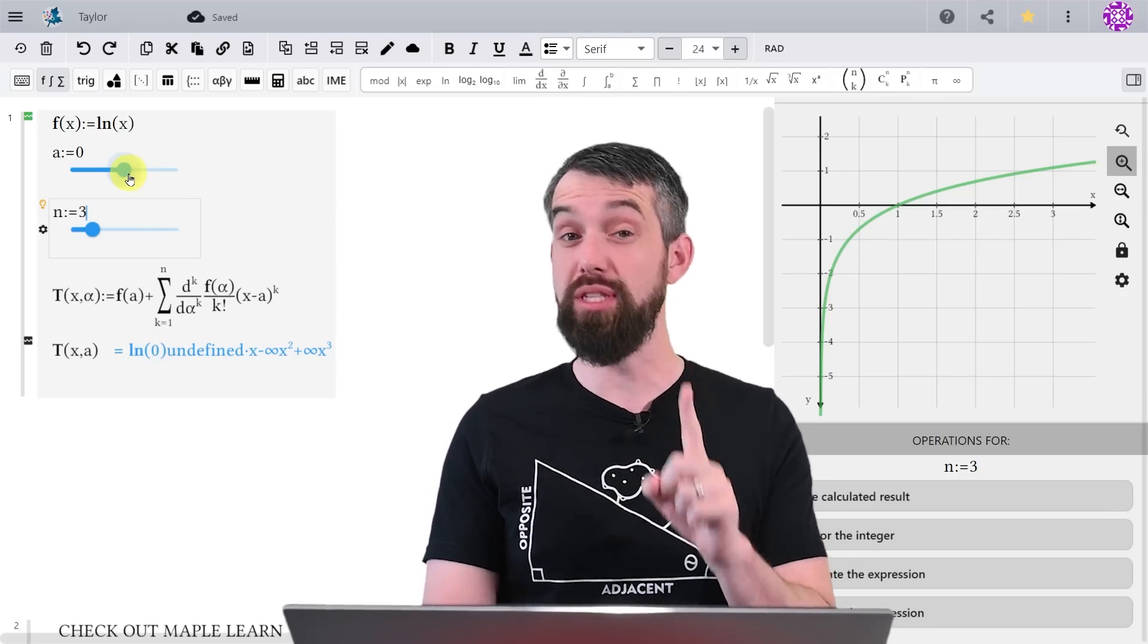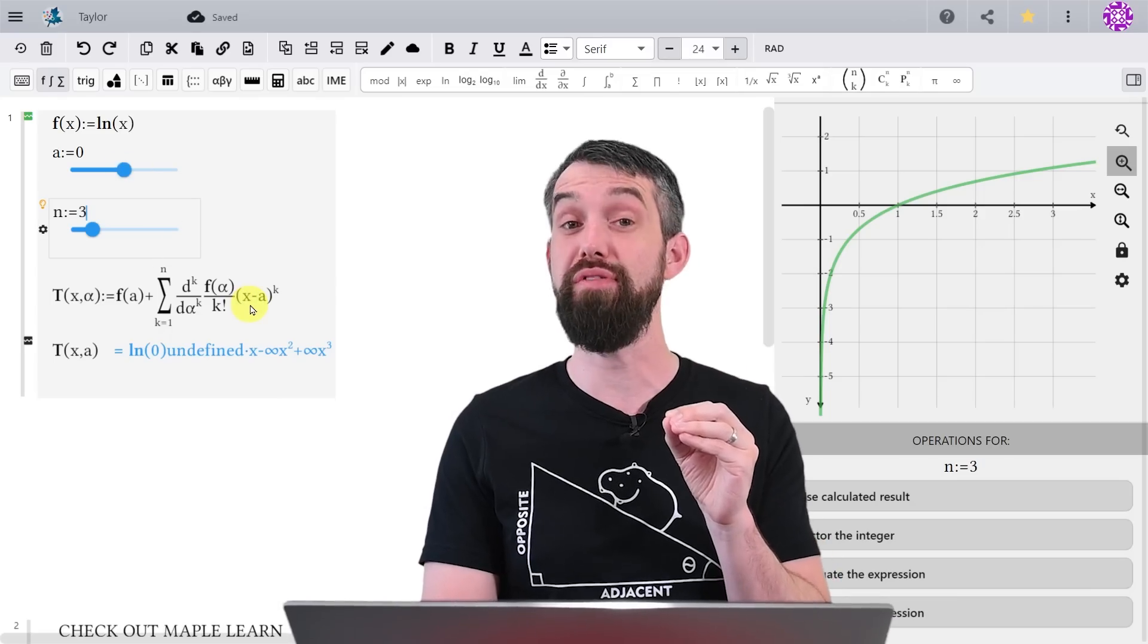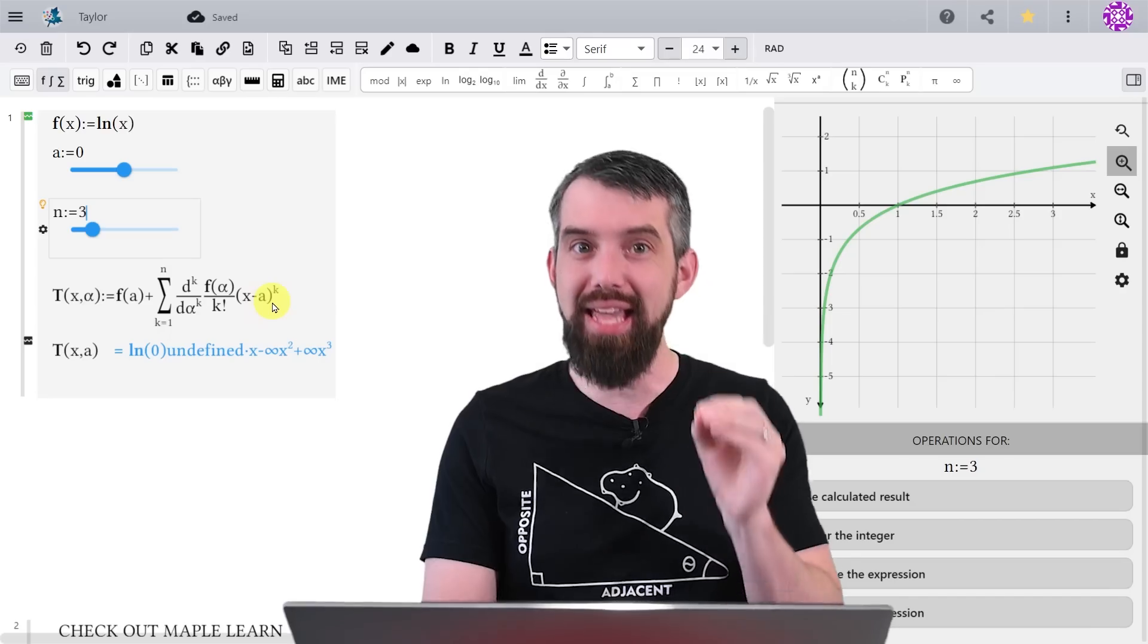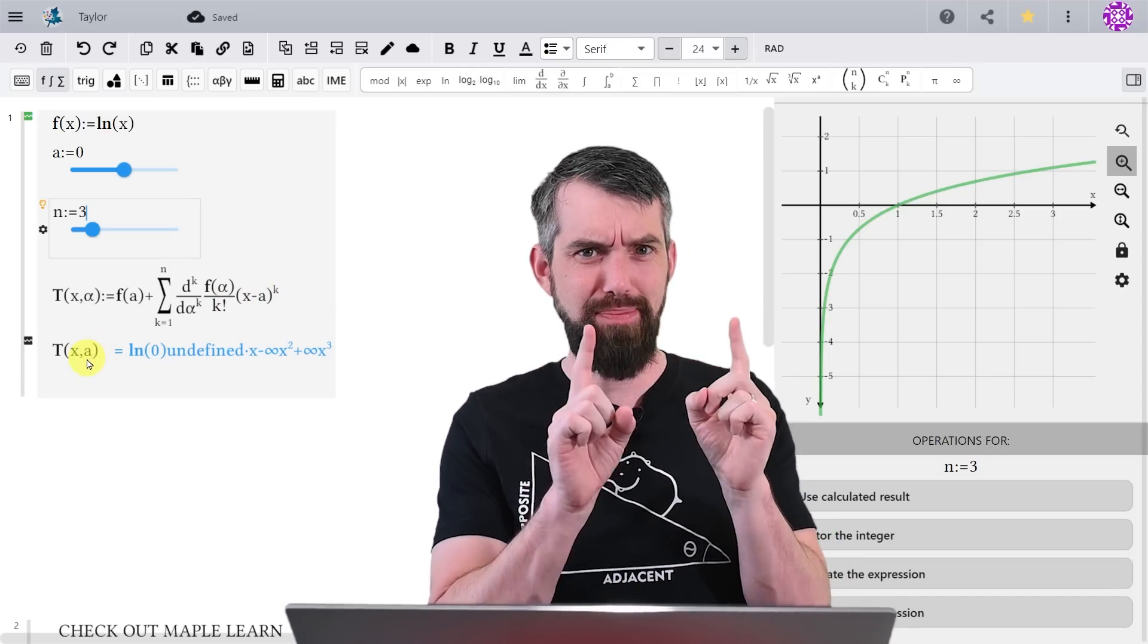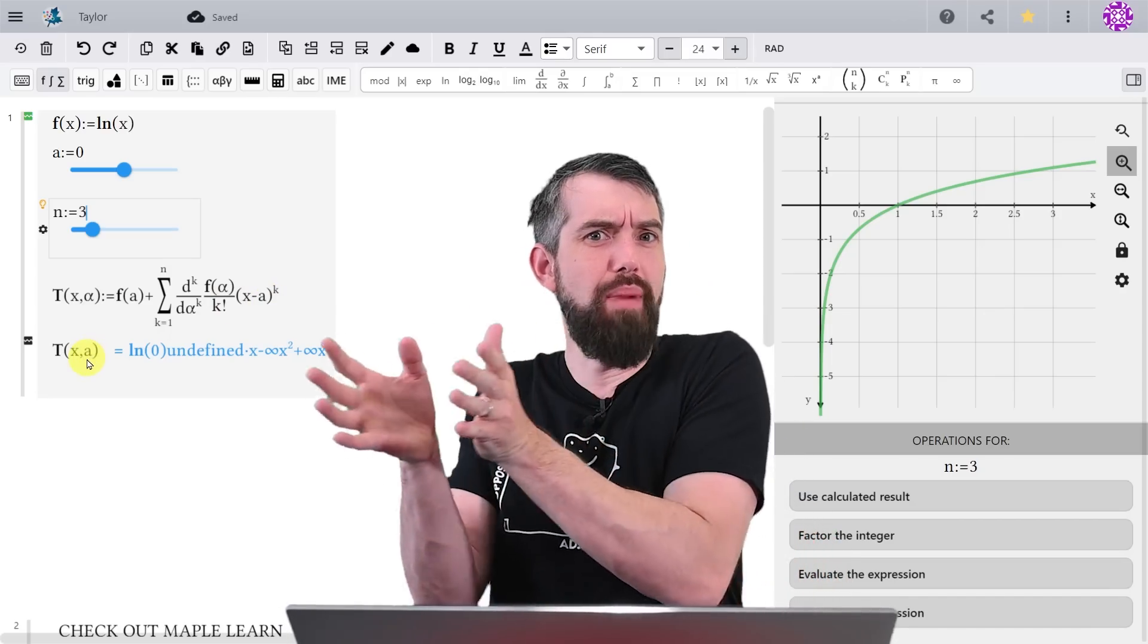Well, I have another slider here, which is the a slider. And this is part of the expression, the x minus a to the power of k, and all the derivatives get evaluated at a. So this is basically saying, where am I doing my approximation?